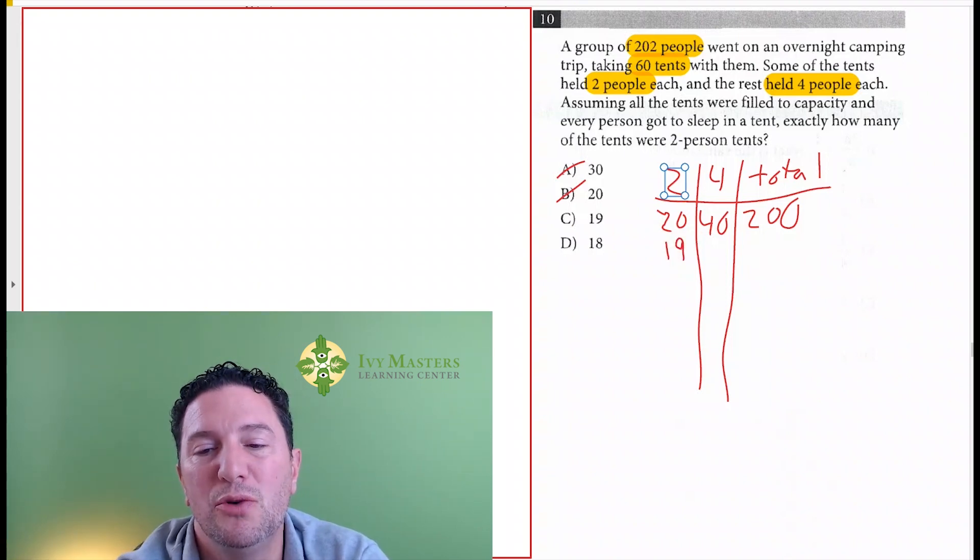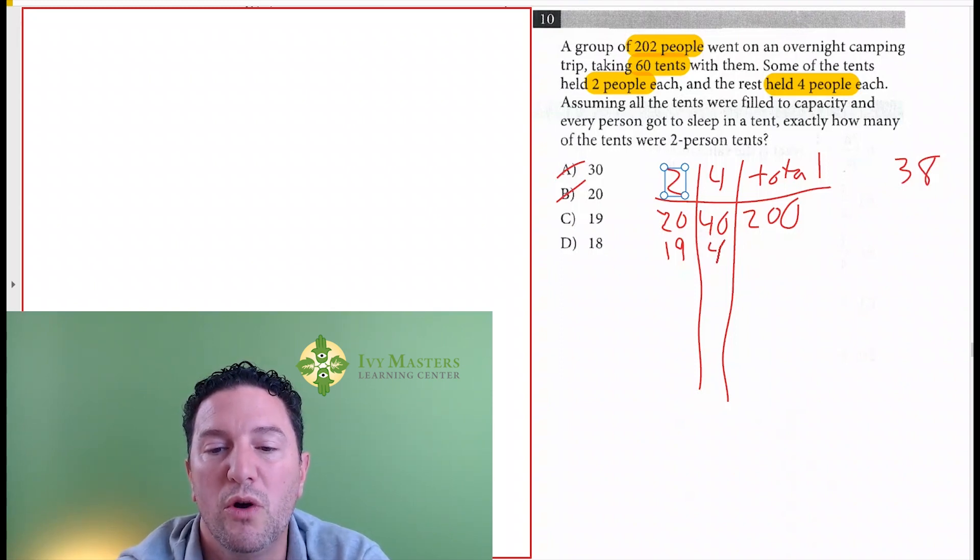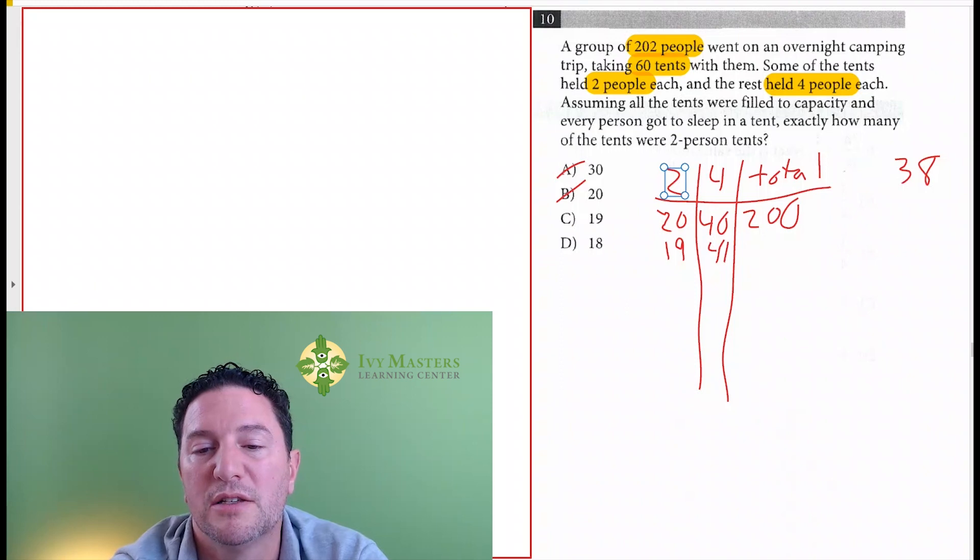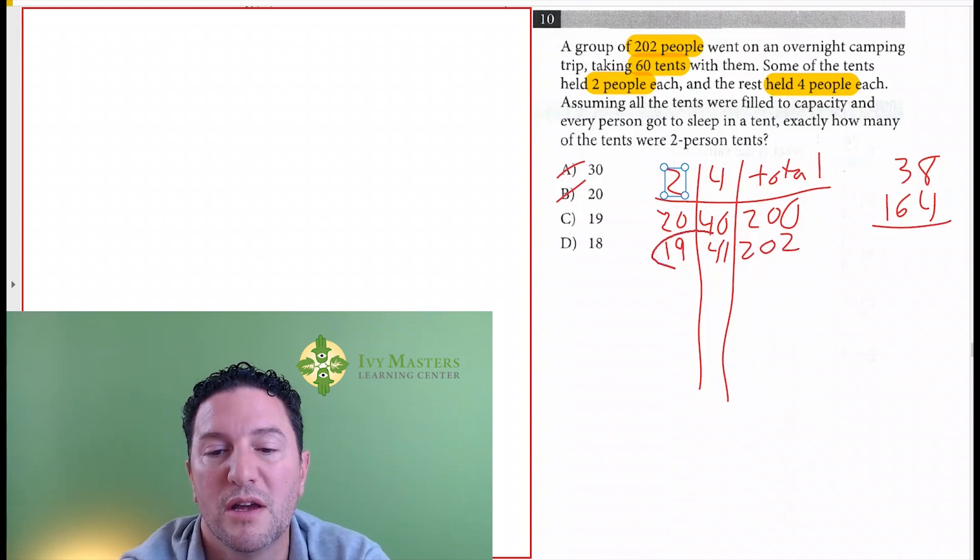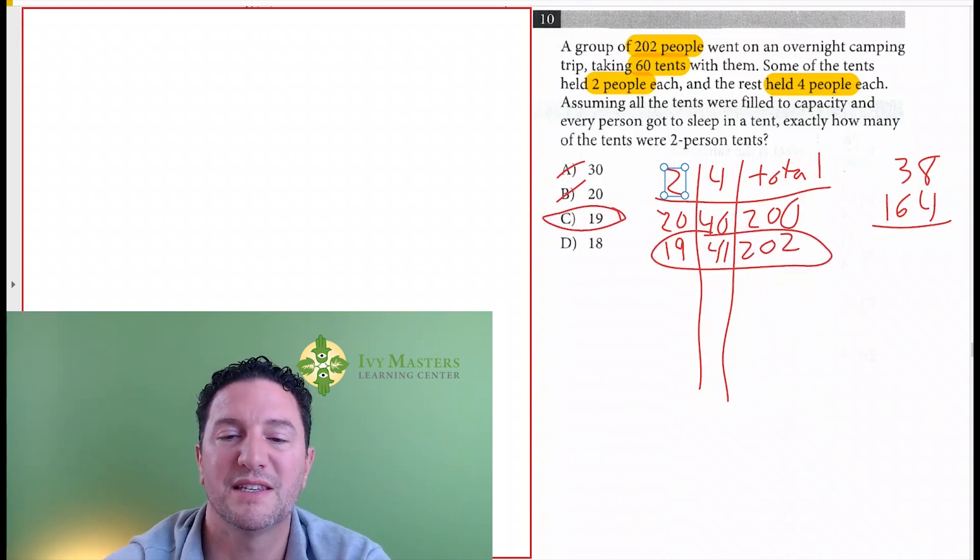If we make 19 two-people tents, that's going to be 19 times 2, which is total 38 people. That would give you 41 four-people tents. So 4 times 41 is going to give you 164. And if we add that up, what we get is 202. So it works. This is our answer. It's C.